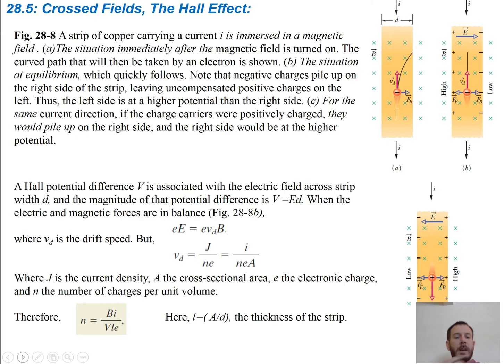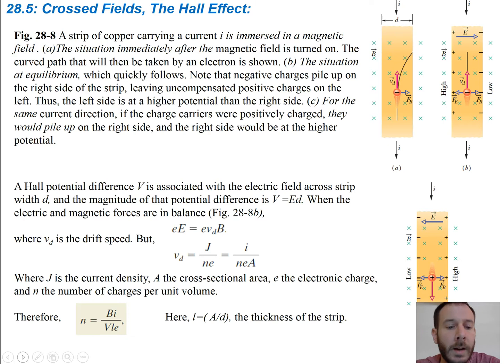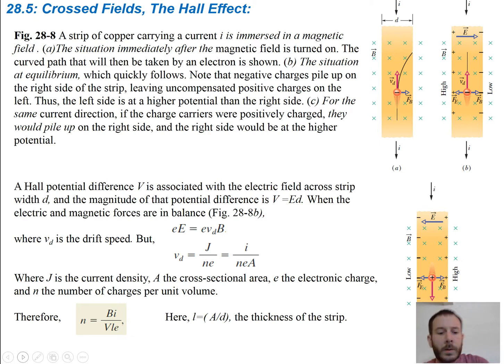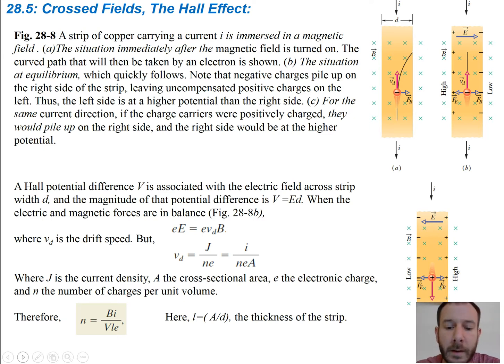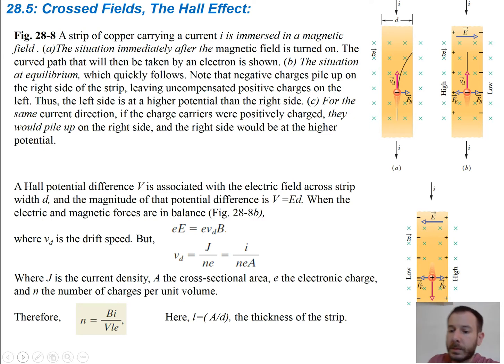Okay, section 5: crossed fields and the Hall effect. In the figures, a strip of copper carrying a current I is immersed in a magnetic field.